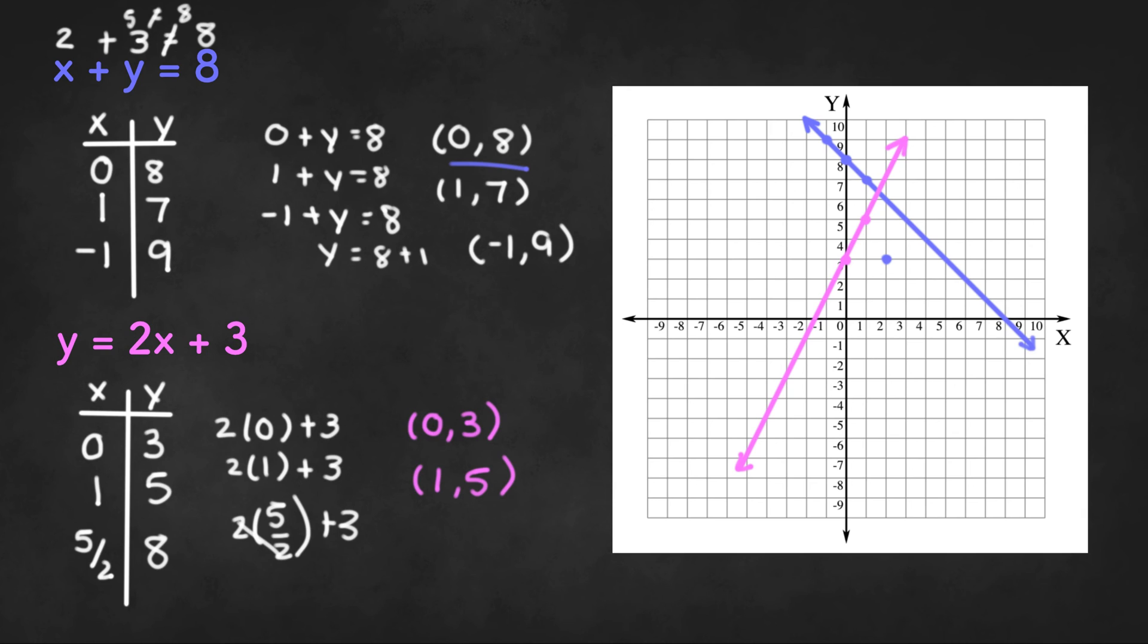So let's try to plot this point and see if it's on the line. So we have 1 half, 2 halves, 3 halves, 4 halves, 5 halves and up to 8. And that is on the line. So any of these points right over here are going to be solutions to the equation y equals 2x plus 3.